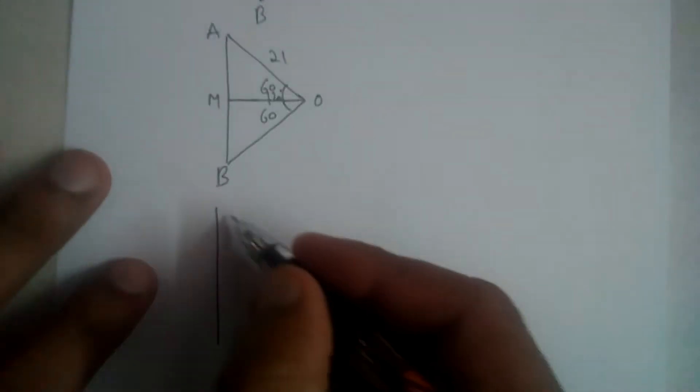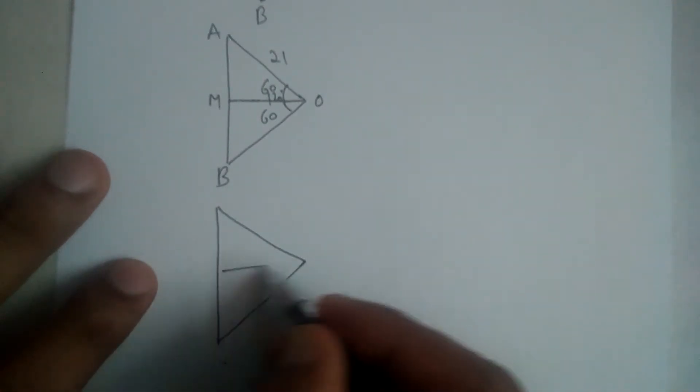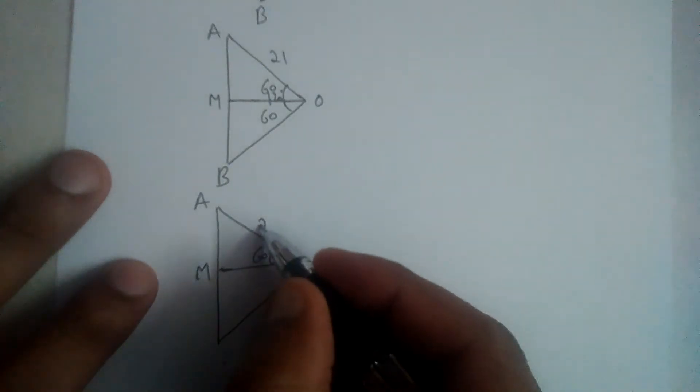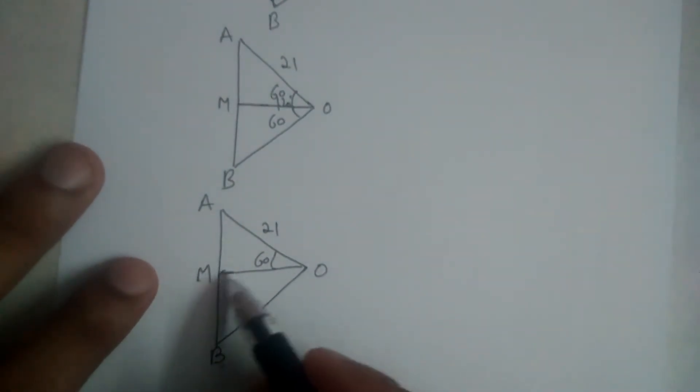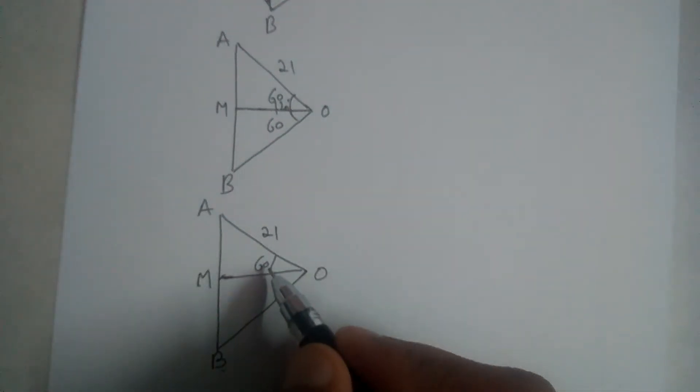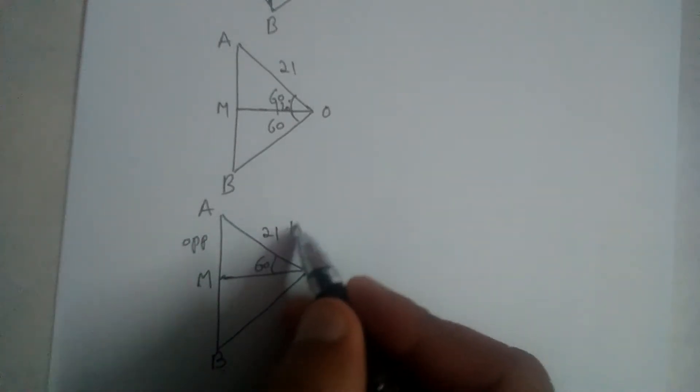So this is like this now, 60 degrees, A, M, and O, 21. This is B, M is the midpoint of AB. To this angle, AM is the opposite side and AO is hypotenuse.